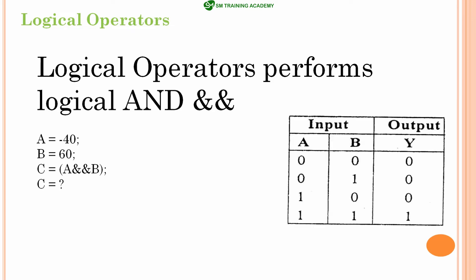As we know from the truth table of the AND gate, two inputs are required and one output is produced. 0 AND 0 gives 0; 0 AND 1 gives 0; 1 AND 0 gives 0; and 1 AND 1 gives 1. This is the truth table of the AND gate. In our case, A is true (minus 40, not 0) and B is also true (60, also not 0). True AND true gives us true, so C will be having the value 1.